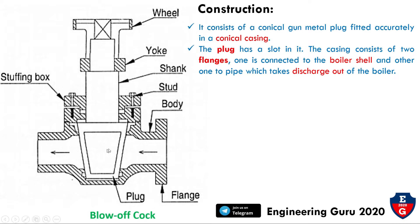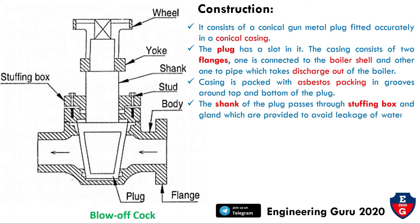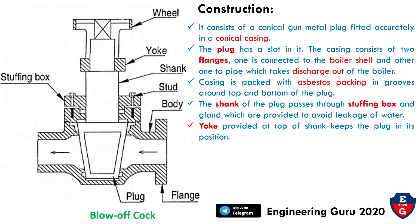The casing is packed with asbestos packing in grooves around the top and bottom of the plug, as seen in the figure. The shank of the plug passes through the stuffing box and gland, which are provided to avoid leakage of water. The yoke is provided at the top of the shank and keeps the plug in its position.